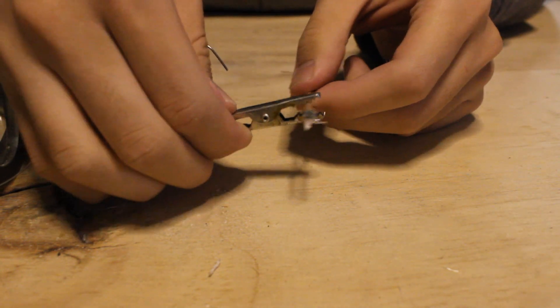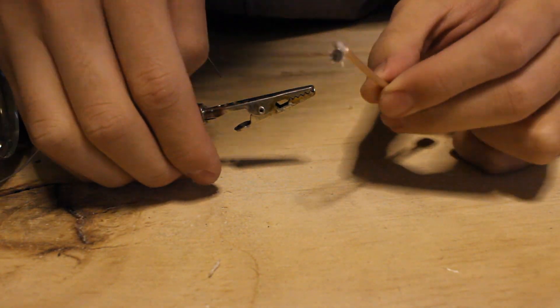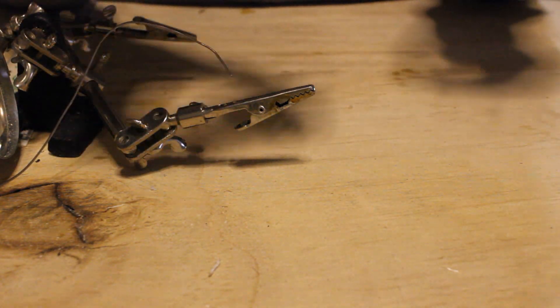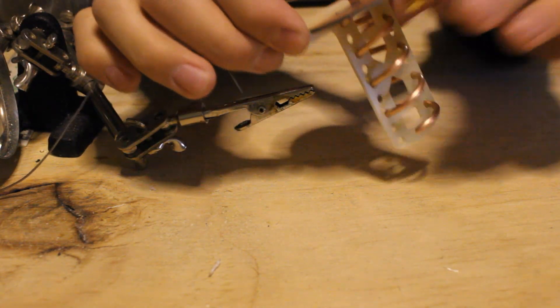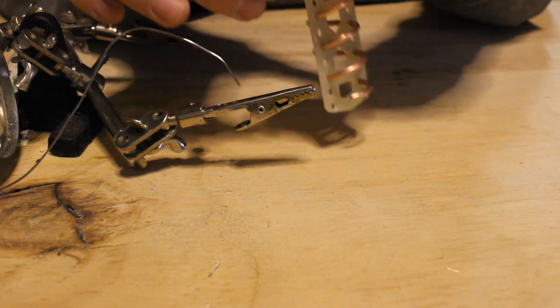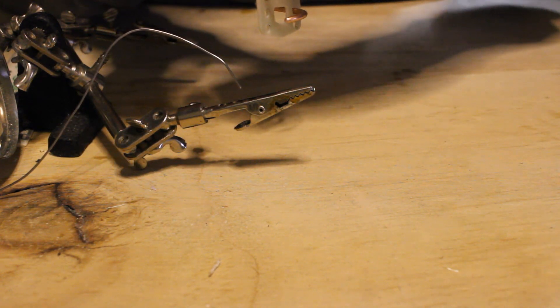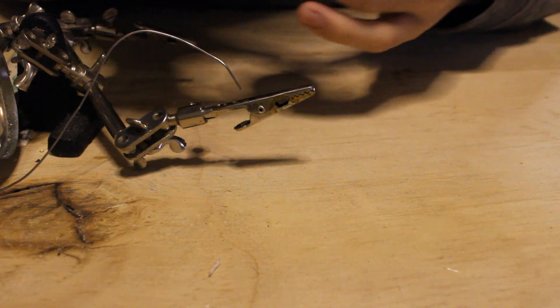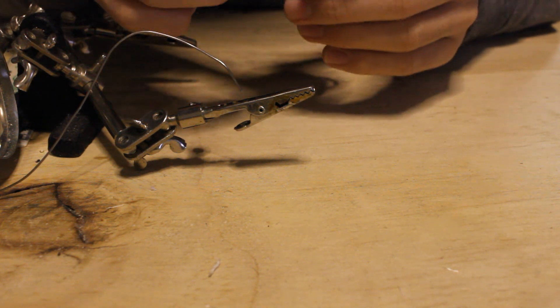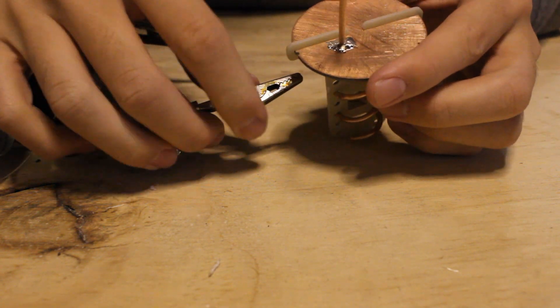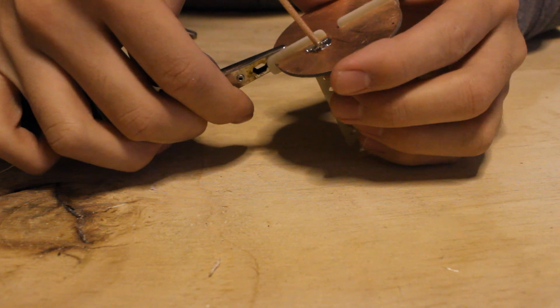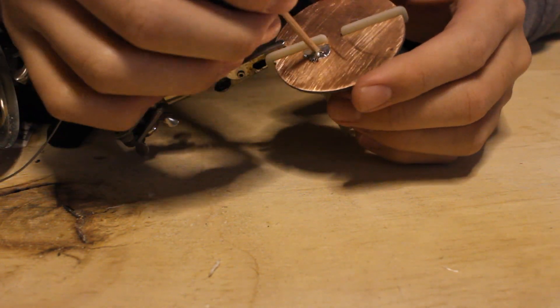Now that you have your coaxial cable tinned up, you can go ahead and take your reflector plate, stick this part in, should get a nice fitting sound. This is actually kind of tricky to do on camera so you guys are probably not going to see this part.